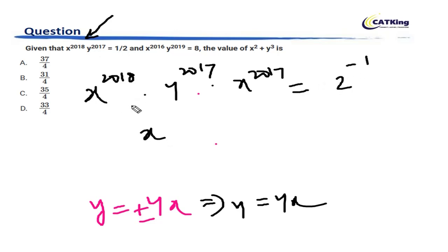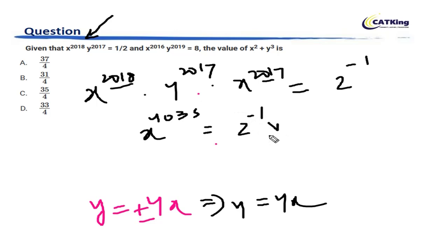This equals 1/2, which is 2 to the power minus 1. So X to the power 2018 plus 2017 becomes X to the power 4035. On the right side, 4 to the power 2017 becomes 2 to the power 4034, and moving it to the other side gives 2 to the power minus 4034.